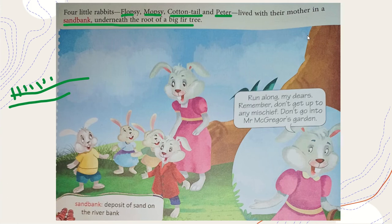One day the mother rabbit told the kids: 'Run along my dears, but remember don't get up to any mischief, and don't go into Mr. MacGranger's garden.' So she said you all can run and play but don't do any mischief and don't go to Mr. MacGranger's garden.